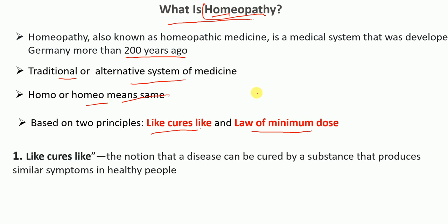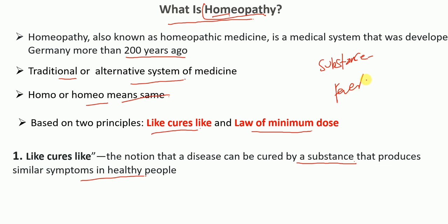The principle of 'like cures like' is the notion that a disease can be cured by a substance that produces similar symptoms in healthy people. For example, if a person is suffering from fever — where the body temperature is high — a substance that produces heat in the body can be used in the treatment of fever in homeopathic medicine.